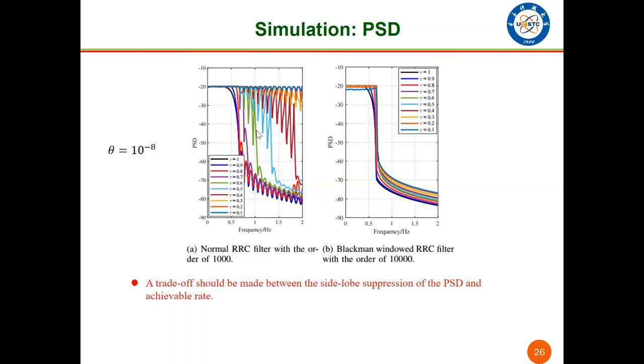This means the corresponding achievable rate in the last sub-figure A is invalid. In contrast, the higher-order windowed RC filter has sufficiently low side-lobes. So for the case of sub-figure A, a larger threshold should be considered to avoid severe side-lobes for small tau. A trade-off should be made between the side-lobe suppression of the PSD and achievable rate.